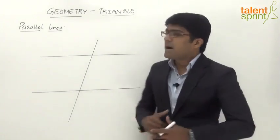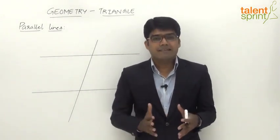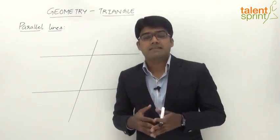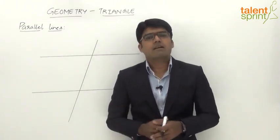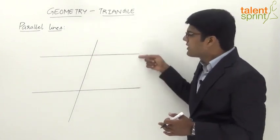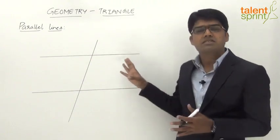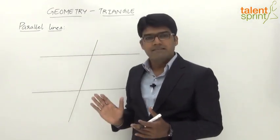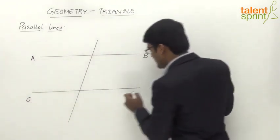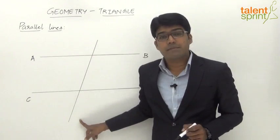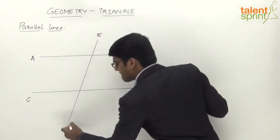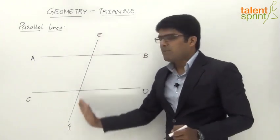Now let us move on to parallel lines. Parallel lines are two lines that would never meet each other even if extended infinitely — the distance between them is constant throughout their length. Consider the two parallel lines AB and CD, cut by a transversal EF. The transversal is the line that cuts the two parallel lines, intersecting AB at one point and CD at another.